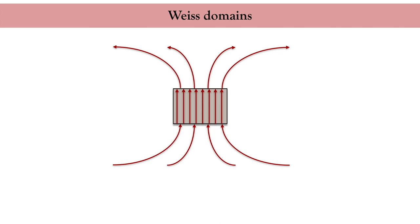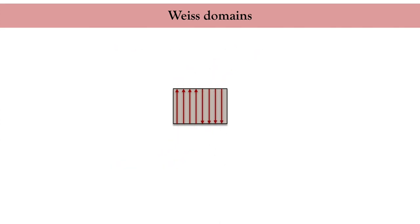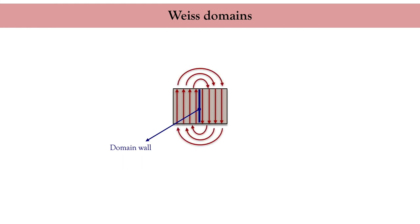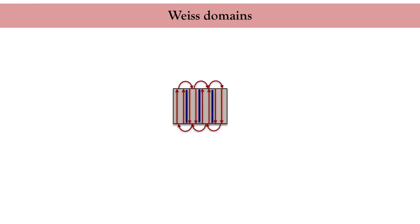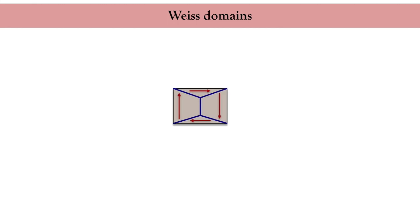To reduce this stray field, I can flip half of the magnetic moments downwards. This comes at the expense of creating a domain wall and does reduce significantly the radiated stray field. I can do better and create more anti-parallel magnetic domains, thus creating more domain walls but reducing the stray field further. Another method is to create magnetic domains with moments forming an extended vortex configuration.